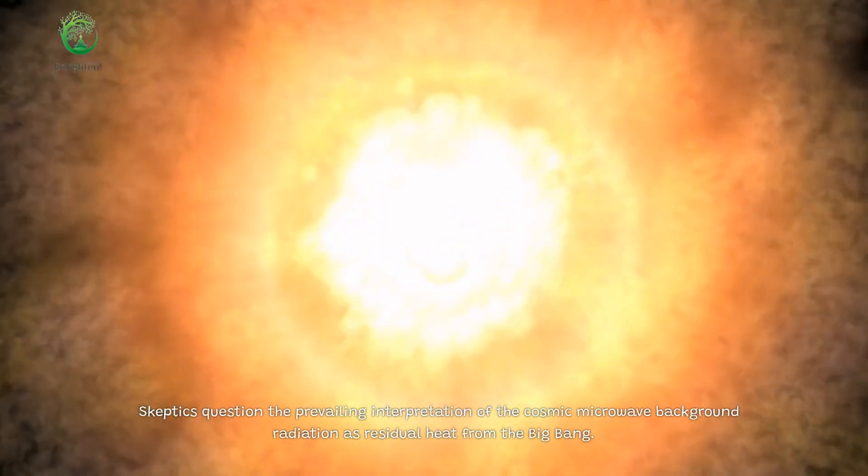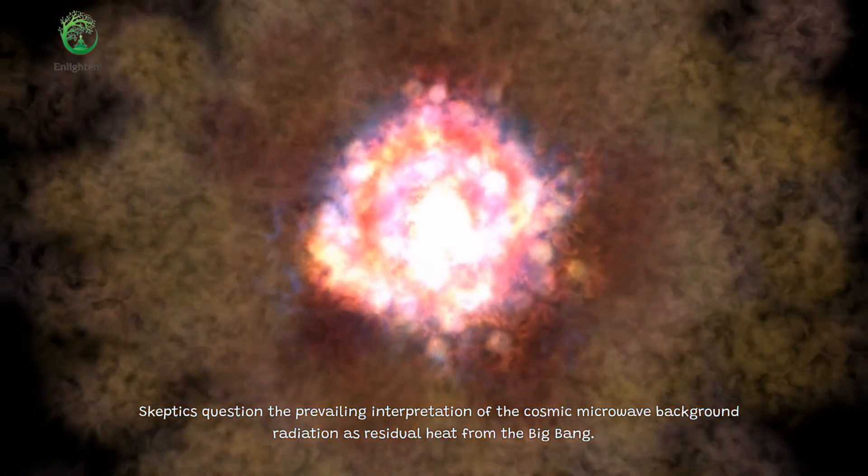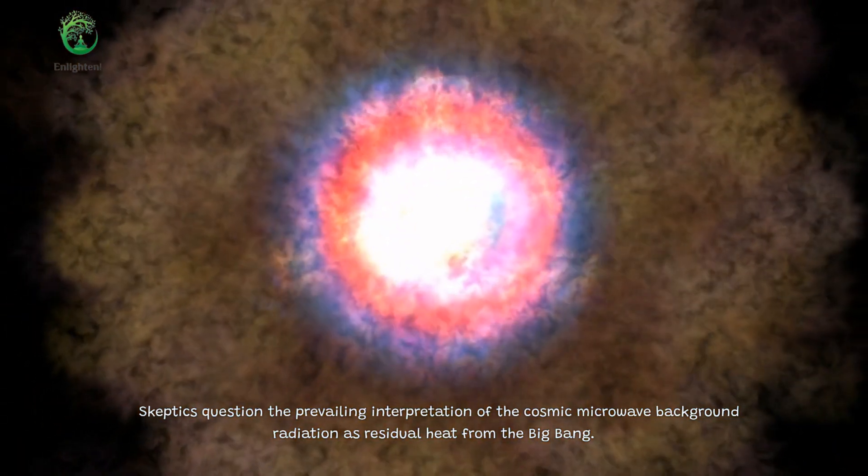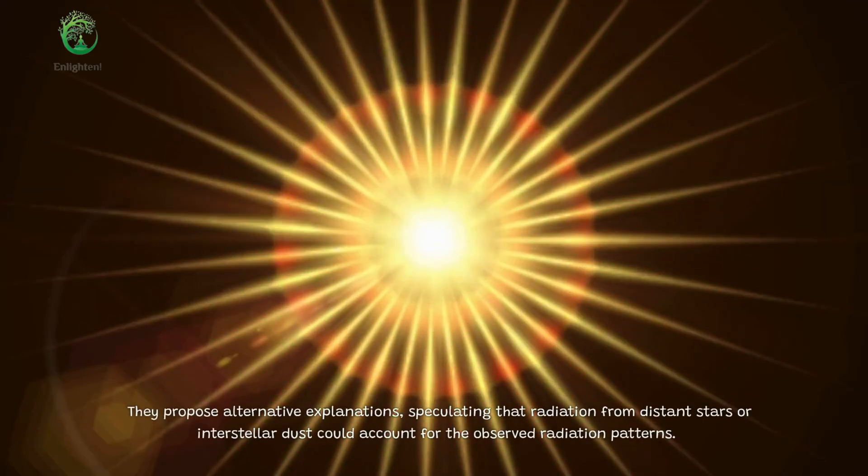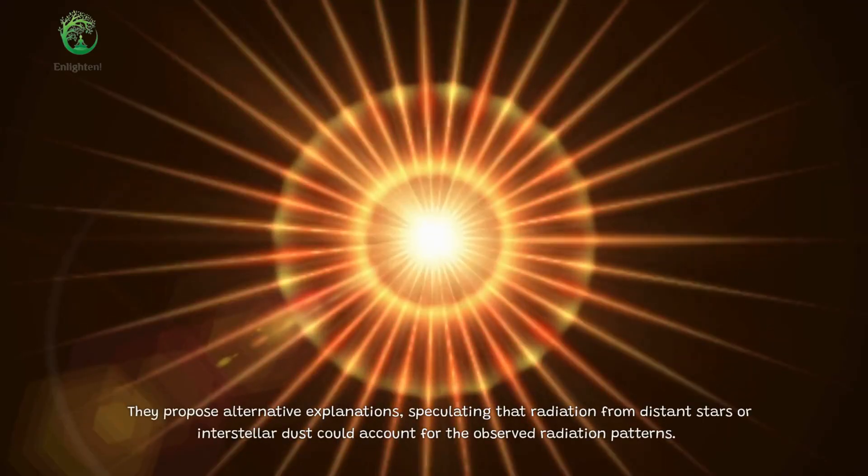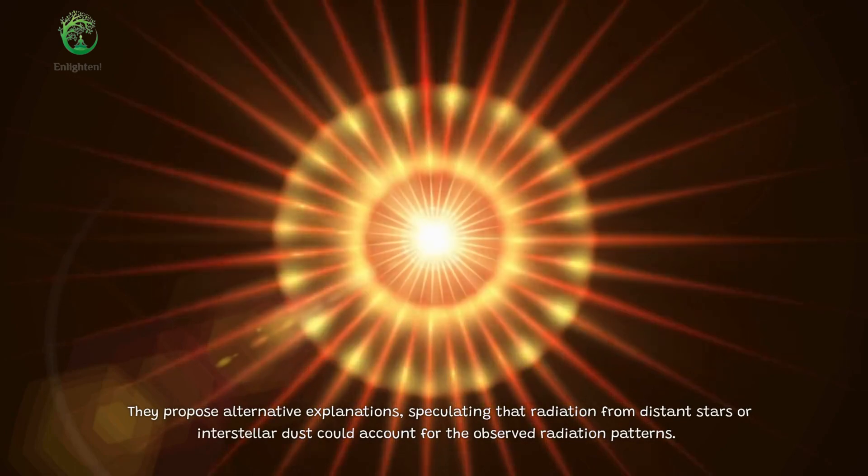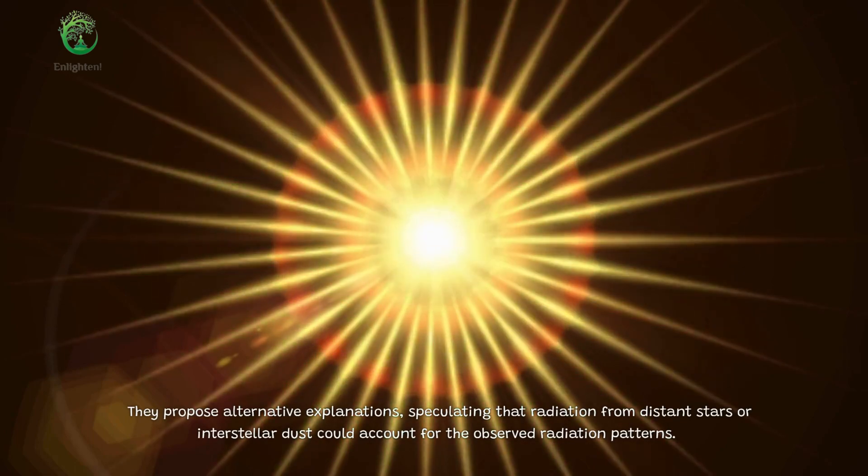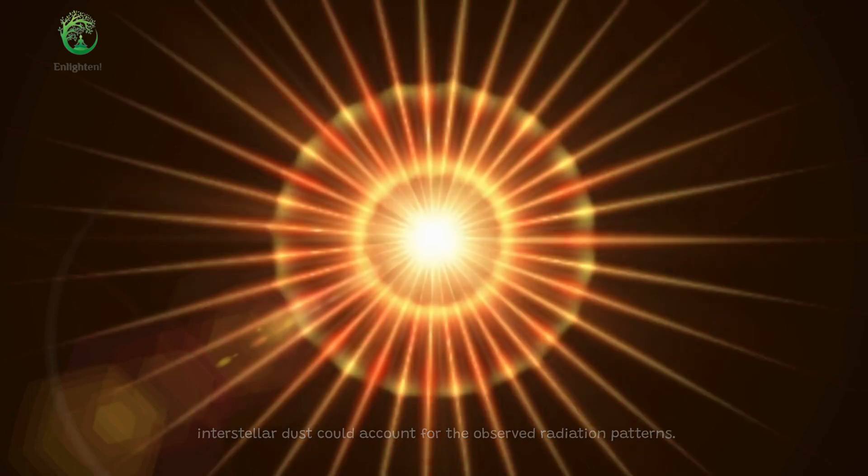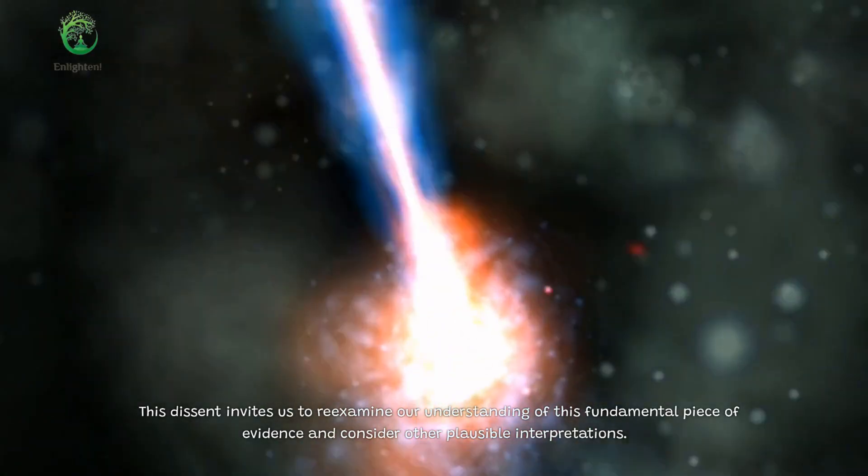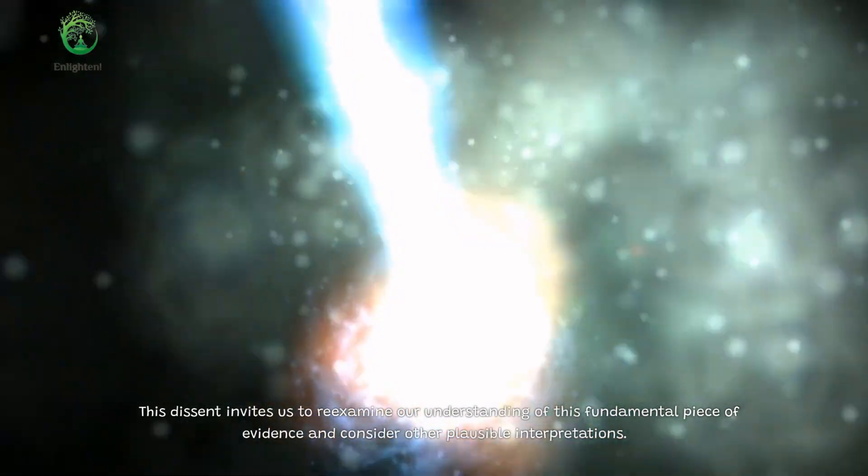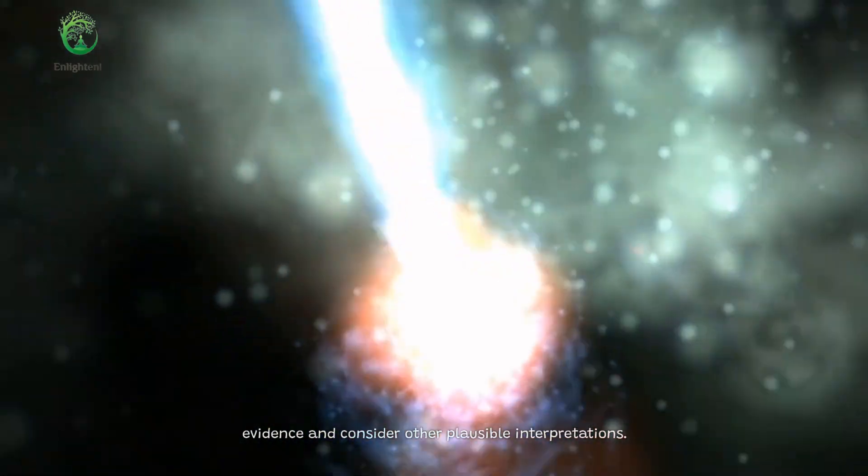Skeptics question the prevailing interpretation of the cosmic microwave background radiation as residual heat from the Big Bang. They propose alternative explanations, speculating that radiation from distant stars or interstellar dust could account for the observed radiation patterns. This dissent invites us to re-examine our understanding of this fundamental piece of evidence and consider other plausible interpretations.